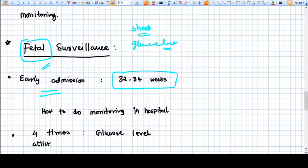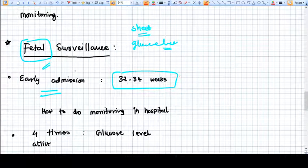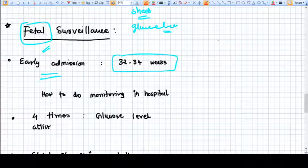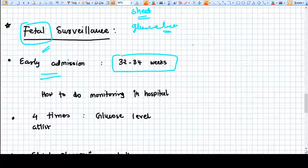Now the very important part of management is fetal surveillance. In general ANC visits, we do maximum ultrasounds so that we can detect congenital anomalies early. We already have a video regarding congenital anomalies and how we deal with that.